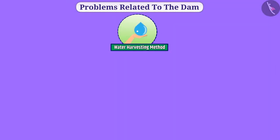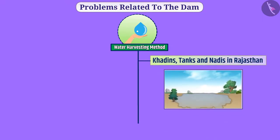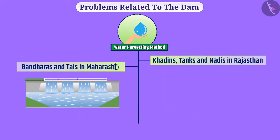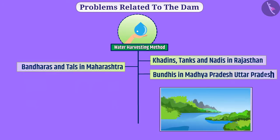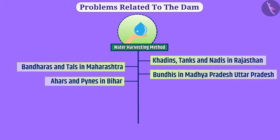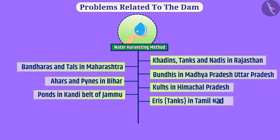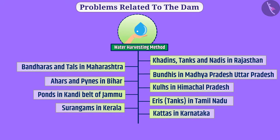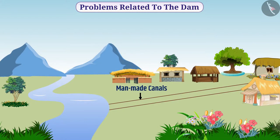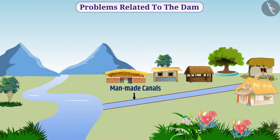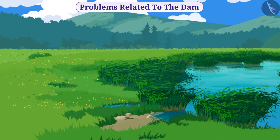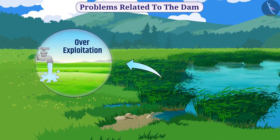There are also popular methods of water harvesting at various places: khadins, tanks and nadis in Rajasthan; bandharas and talas in Maharashtra; bundis in Madhya Pradesh and Uttar Pradesh; ahars and pines in Bihar; kuls in Himachal Pradesh; ponds in the kandhi belts of Jammu; eris (tanks) in Tamil Nadu; surangams in Kerala; and khattas in Karnataka. With the help of man-made canals, water is brought to the village by changing the route of the river. By giving control of these local structures back to local people, proper management will be done and over-exploitation can be reduced.